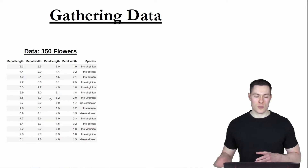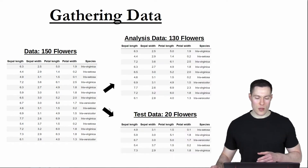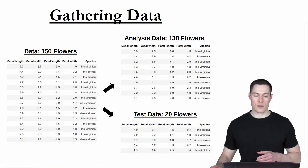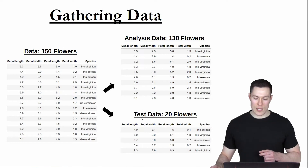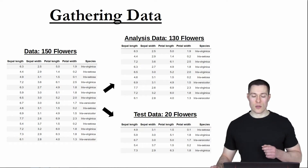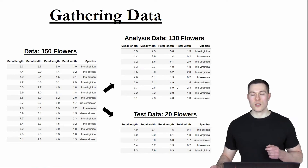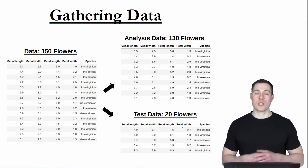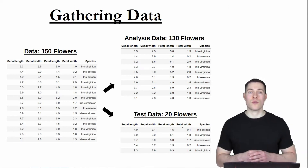Before you start, you randomly pick out 20 flowers from those 150, and those will serve as your first test case. With them, you can check if the patterns you found in your analysis are actually valid and really help to distinguish the different types of flowers.